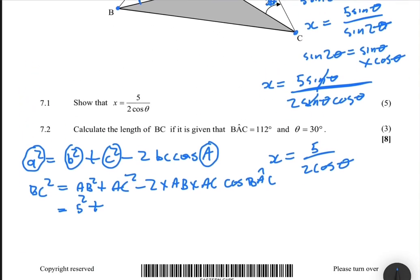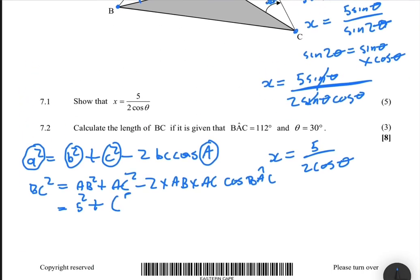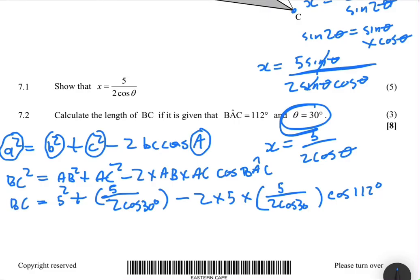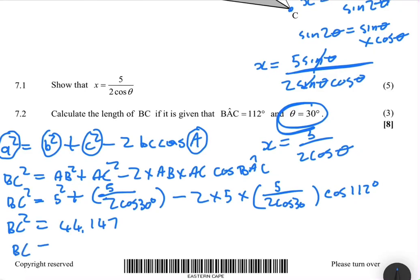AB is 5, so we have 5 squared plus AC squared. AC is X, which equals 5 divided by 2 cos theta, and theta is given as 30 degrees, so we substitute 30 degrees. Then minus 2 times AB — which is 5 — times AC — which is 5 divided by 2 cos 30 degrees — times cos of BAC which is 112 degrees. This gives BC squared equals 44.147, so taking the square root, BC equals 6.64 units.